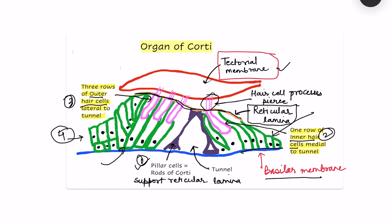There is basically one row of inner hair cells — just one cell is shown in this diagram, but the organ of Corti extends throughout the length of the cochlea in a transverse manner, so this row extends along the entire cochlea.